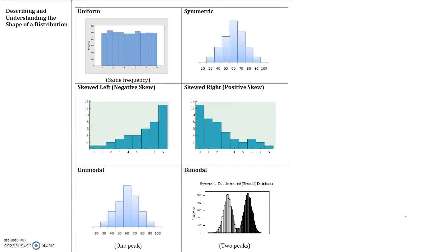Now let's talk about describing and understanding the shape of a distribution. The first distribution is called a uniform distribution — in a uniform distribution, each class has approximately the same frequency. The second distribution is symmetric. In a symmetric distribution, we have one mode, and if you notice, each side has about the same frequency. So this is an approximately symmetric distribution.